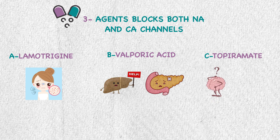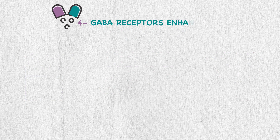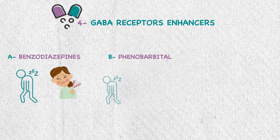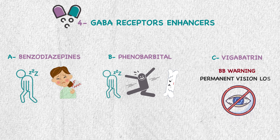Side effects of topiramate include cognitive impairment and renal stones. The fourth group, GABA receptor enhancers, includes benzodiazepines, which can cause somnolence and ataxia, and phenobarbital, which can cause somnolence, hyperactivity, and bone demineralization. Vigabatrin has a black box warning for causing permanent vision loss.